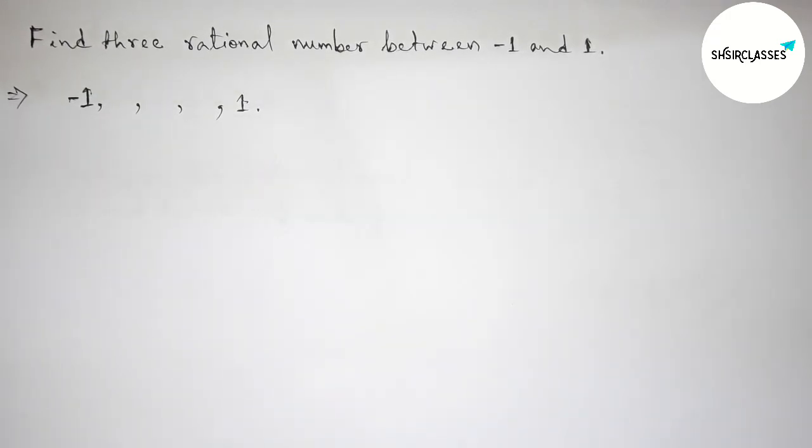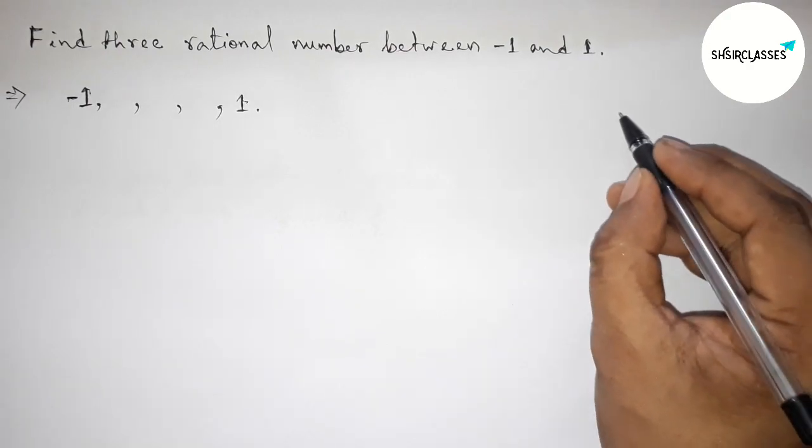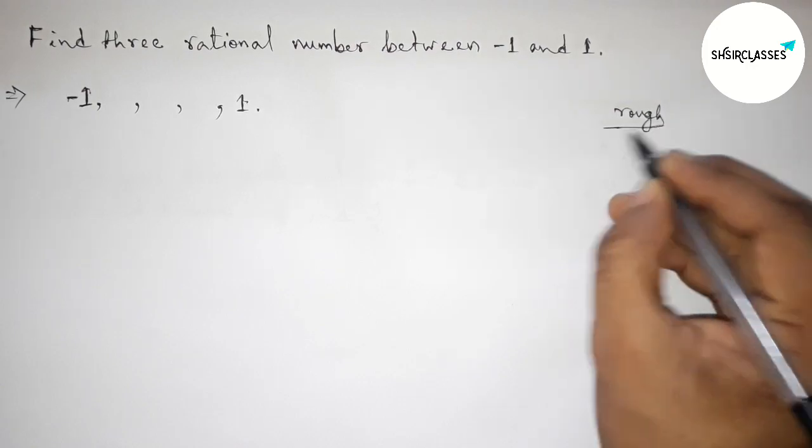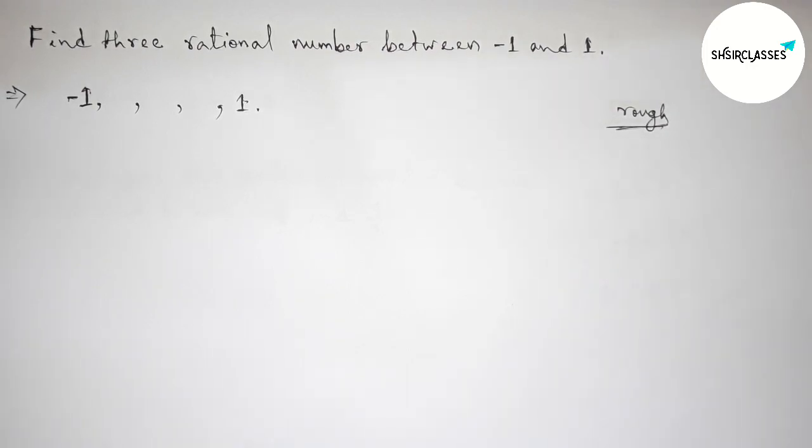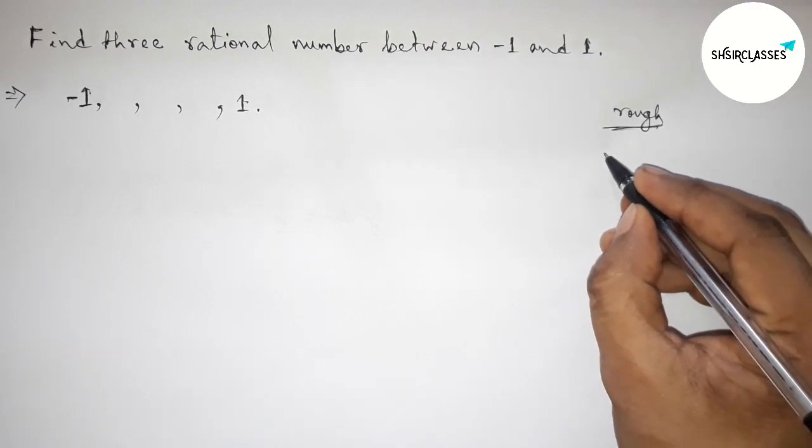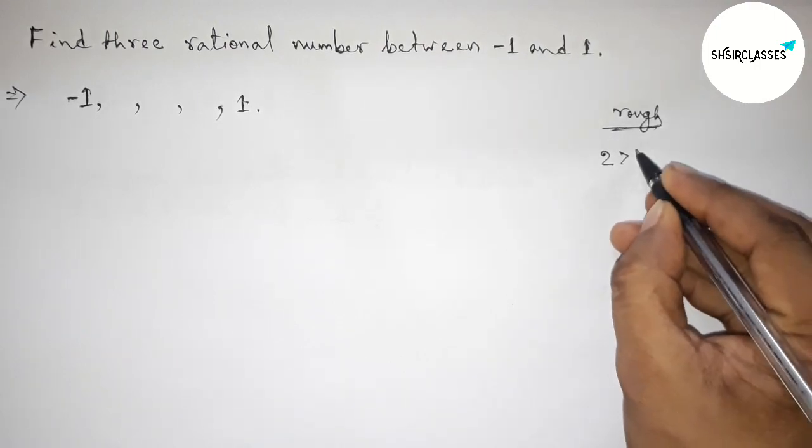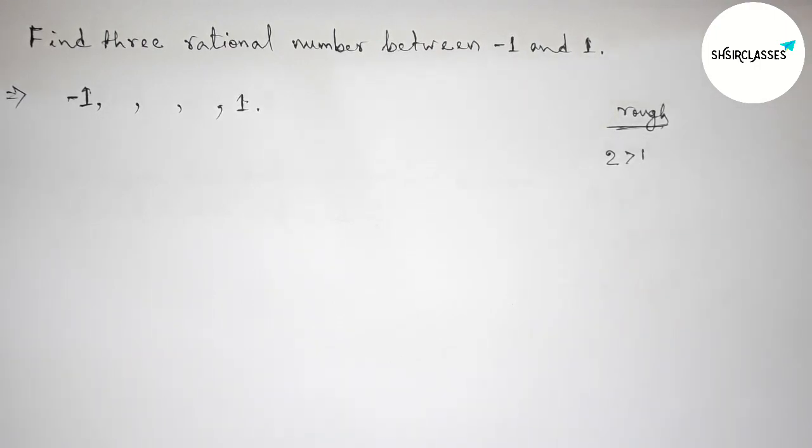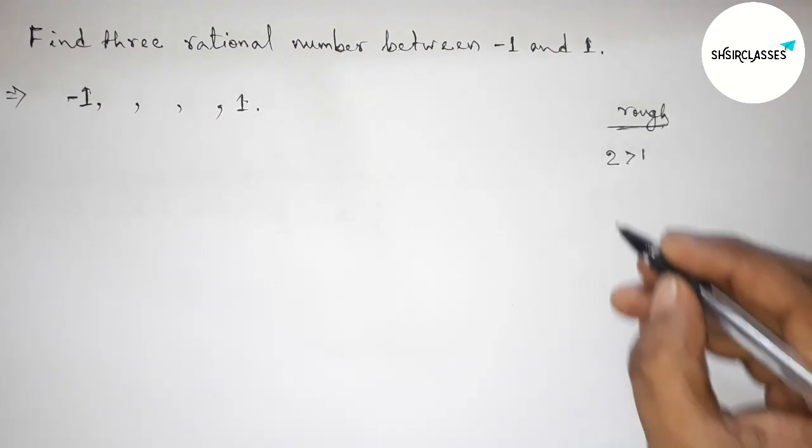Now first, roughly discussing some important calculations. First of all, taking here a number two which is greater than one. Now taking the inverse of both numbers. The inverse of two is one by two and the inverse of one is one. So one by two is always less than one.